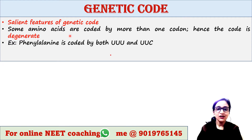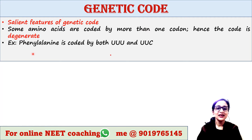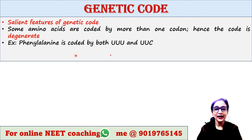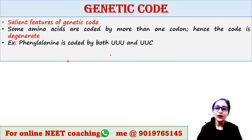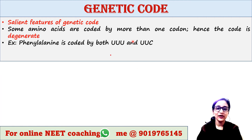Some amino acids are coded by more than one codon; hence, the code is called degenerate. For example, phenylalanine is an amino acid that is coded by both UUU and UUC. So one amino acid can be coded by more than one codon. This feature is called degeneracy of the codon.